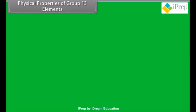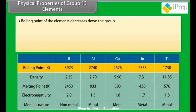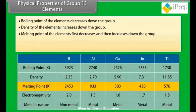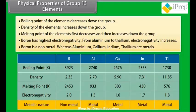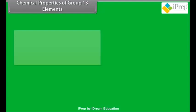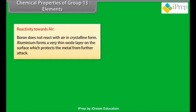Physical properties of group 13 elements: boiling point of the elements decreases down the group. Density of the elements increases down the group. Melting point of the elements first decreases and then increases down the group. Boron has highest electronegativity. From aluminum to thallium, electronegativity increases. Boron is a non-metal, whereas aluminum, gallium, indium, and thallium are metals.